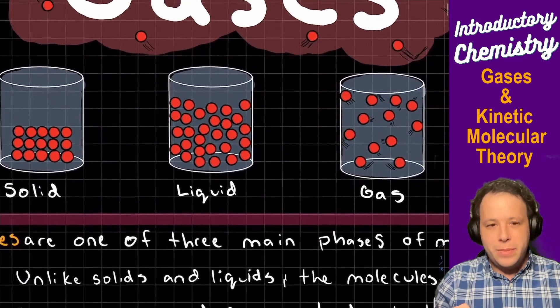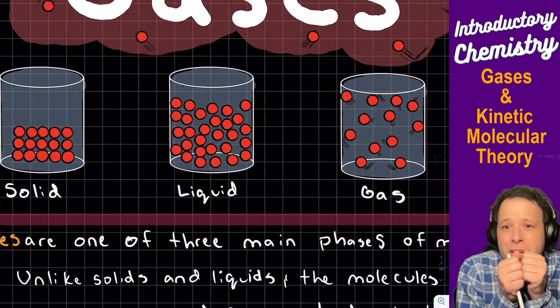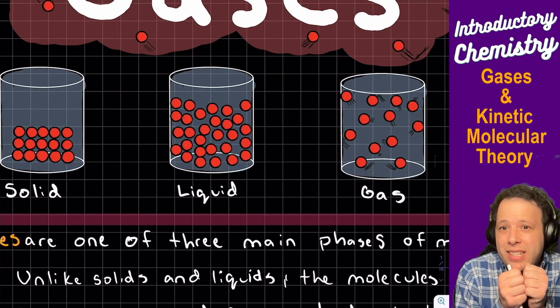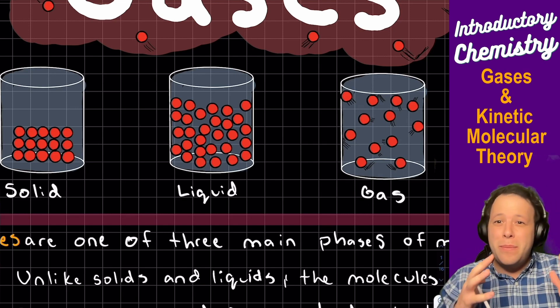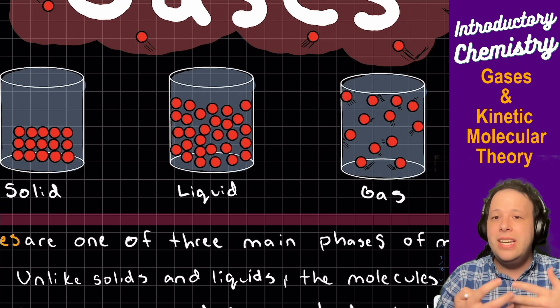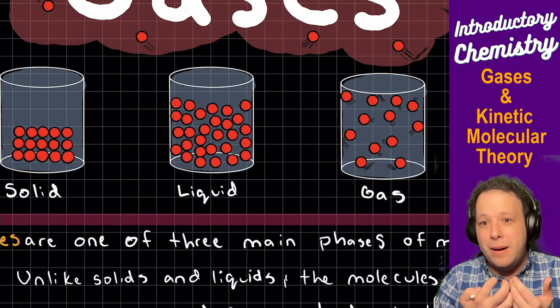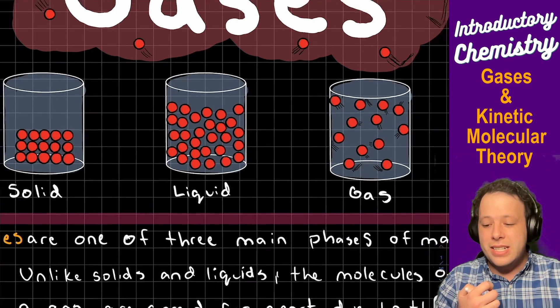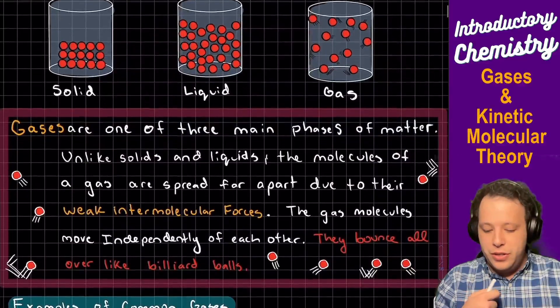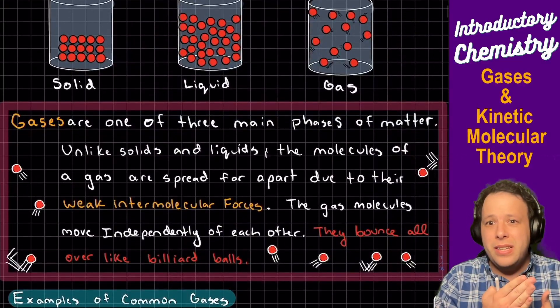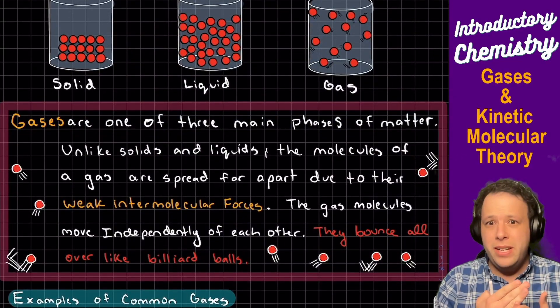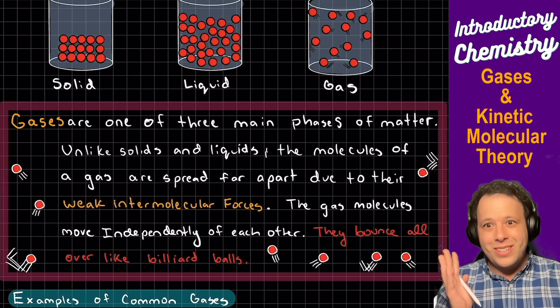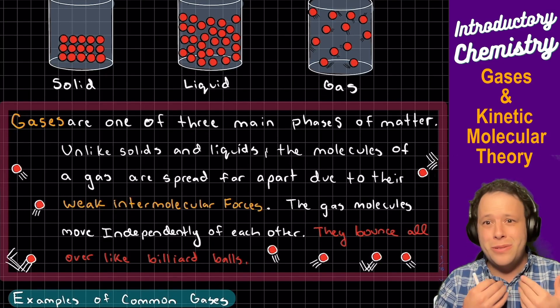Especially when you compare these different images I prepared. When you look at a solid, it's all being held together very tightly. Liquids are a little bit farther apart - they have interactions, it makes it extremely complex to understand. Gases are far apart, it's a simpler system. So the big idea with these is that gases move independently of one another. They just bounce all over the place like a bunch of billiard balls.